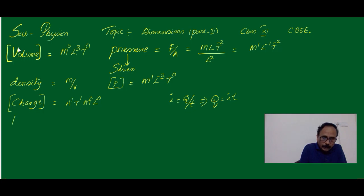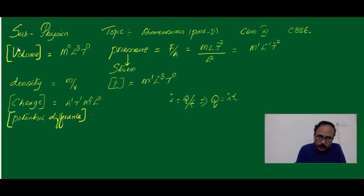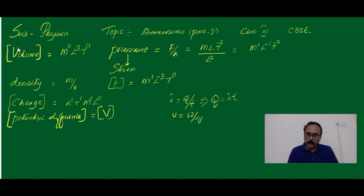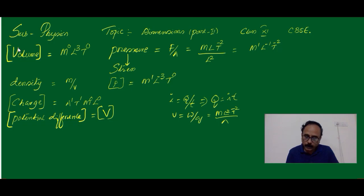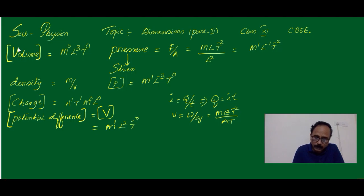Now let us write for potential difference. We know that potential difference is nothing but work done per unit charge. For work done, M1, L2, T-2 is the Dimensional Formula we have written already, and for Q it is A, T. So finally, by simplifying this, we will get M1, L2, T-3 and A-1.